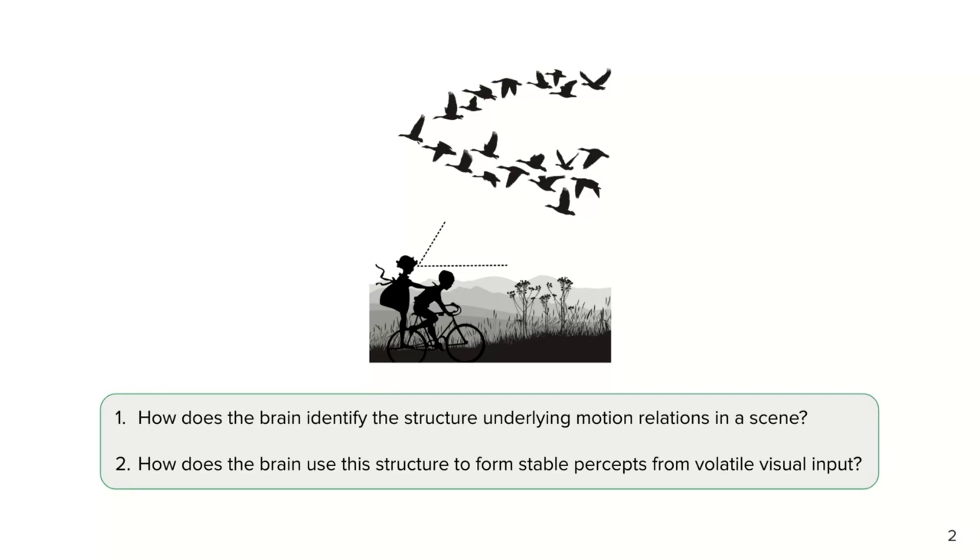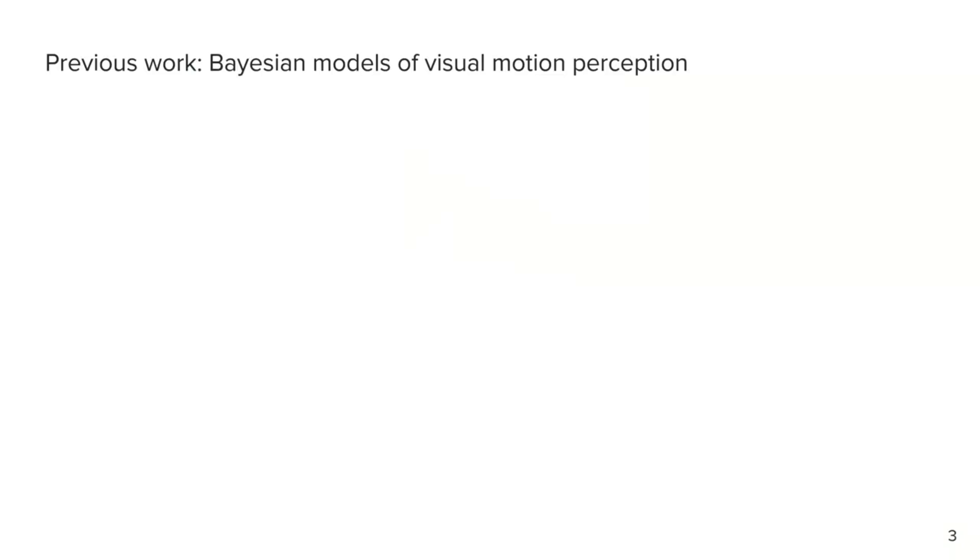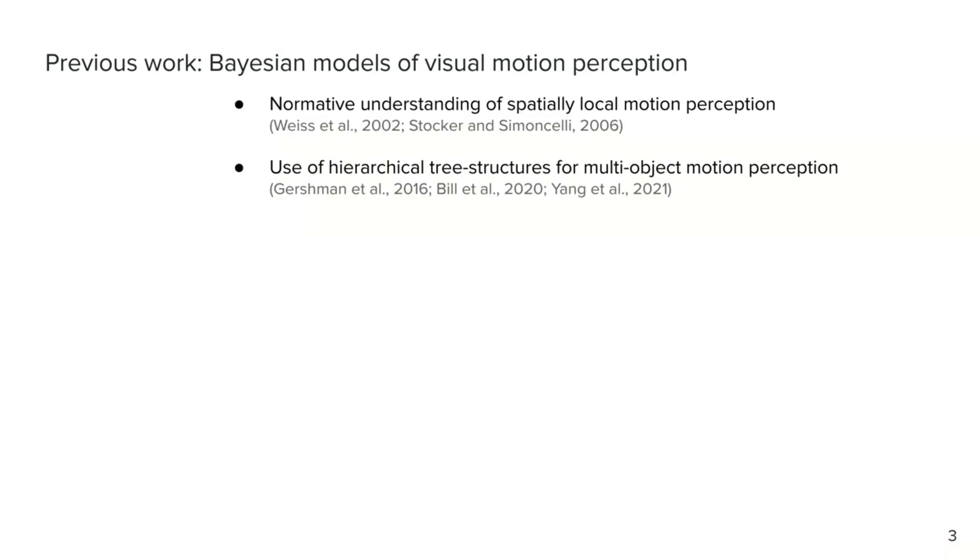We took a normative Bayesian approach to address these questions. Bayesian descriptions have been successfully applied to visual motion perception in the past by providing a normative understanding of local spatially confined motion perception, and for scenes with multiple objects, for showing that humans employ hierarchical tree structures to solve visual tasks.